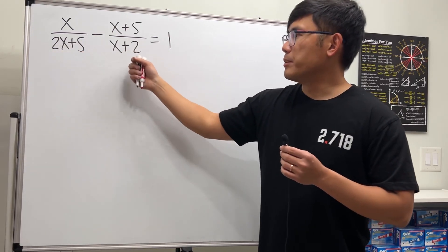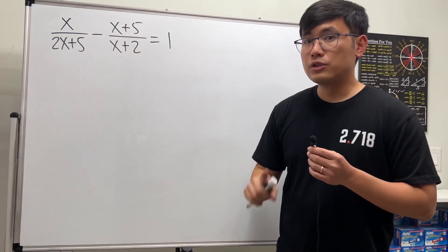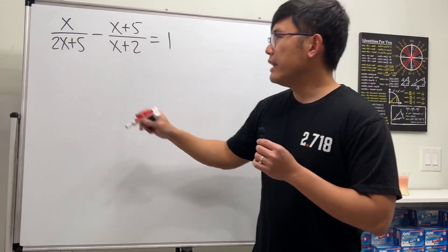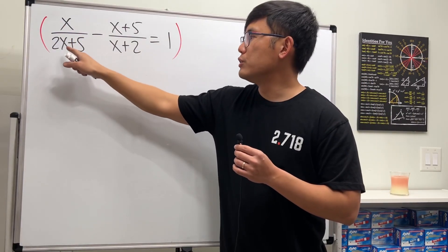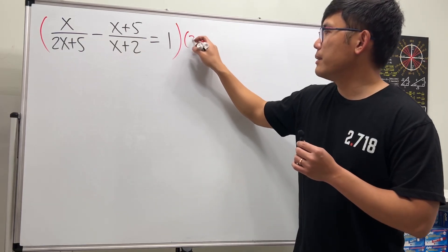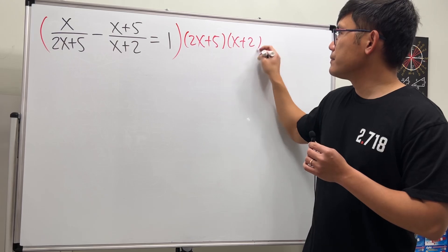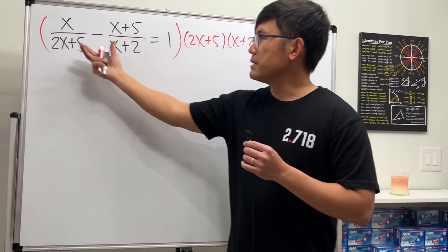Here's the deal: we have an equation, this denominator and that denominator are different, and we cannot factor them. So we can do one thing to clear the denominators—we are going to multiply everybody by the lowest common denominator, which is just this and that. So let's put 2x plus 5 and also x plus 2.